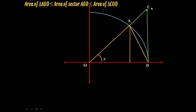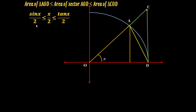Now let us substitute the values we have obtained for their areas. Area of triangle AOD is sin(X) by 2, area of sector AOD is X by 2, and area of triangle COD is tan(X) by 2. So we get: sin(X)/2 ≤ X/2 ≤ tan(X)/2, which can also be written as sin(X) ≤ X ≤ tan(X).